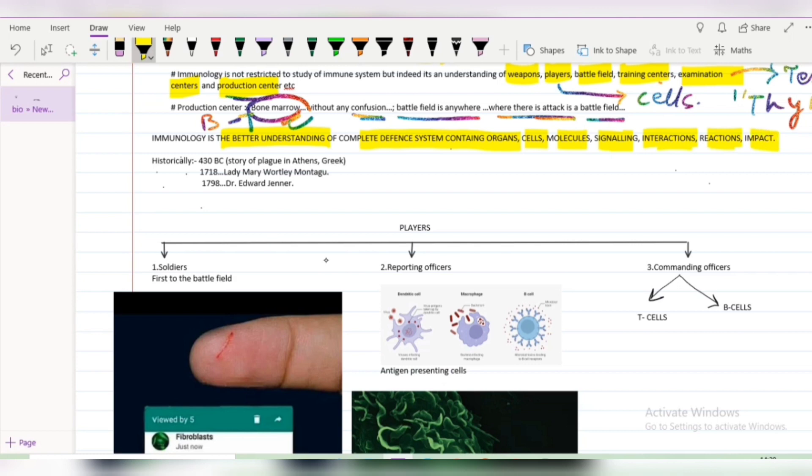When it comes to immunology, we only consider that it is about the study of immune system or organs or whatsoever. But when it comes to the bigger picture, immunology is the better understanding of complete defense system containing organs, cells, molecules, signaling, interactions, reactions, as well as impact over the body. Let's move forward towards the history. It was 430 BC, a story of plague in Athens. People were suffering from plague, a bacterial disease by Yersinia pestis. Whoever recovered from plague were only allowed to nurse the people suffering from plague. This was the very first incident in the history of immunology.